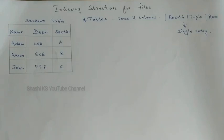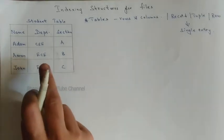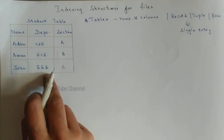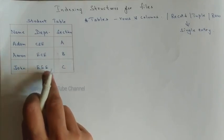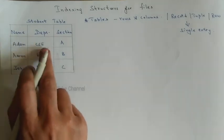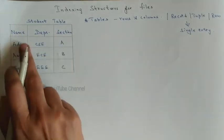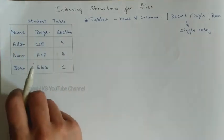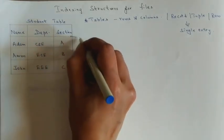Each record can be broken down into several smaller parts of data, also called attributes — the different columns in your table are called attributes. For example, suppose we have a student table for storing information about students; it contains three columns: name, department, and section. So name, department, and section are called the attributes of the student table.